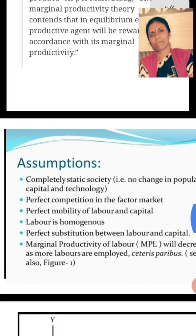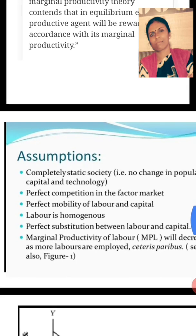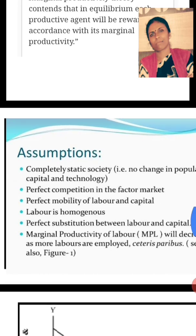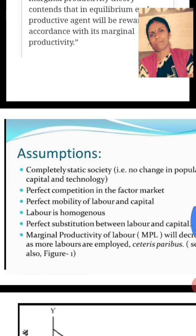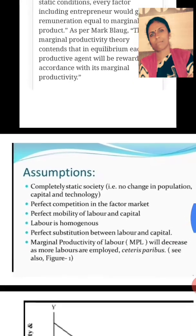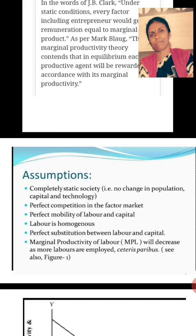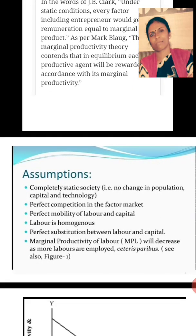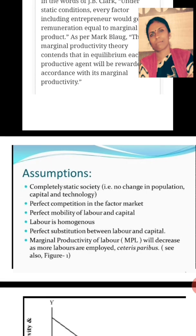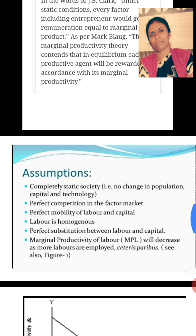Just like any other theories of economics, this theory is also based upon a few important assumptions. The first assumption is a completely static society — meaning no change in population, capital, and technology. Everything remains the same under given conditions. There is no increase or decrease in population.